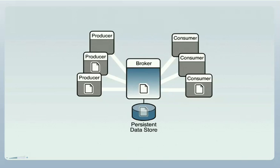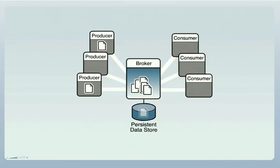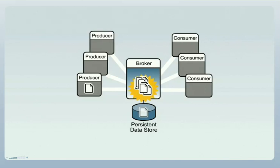Because consumers might be slower than producers, messages can build up in the broker before being delivered and consumed. If the broker should fail, then all message production and delivery comes to an abrupt halt.